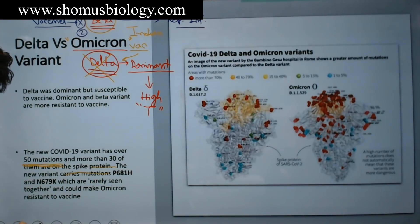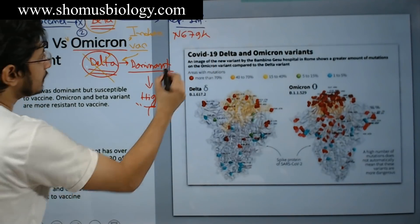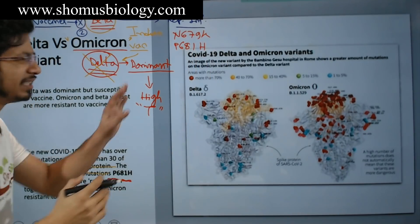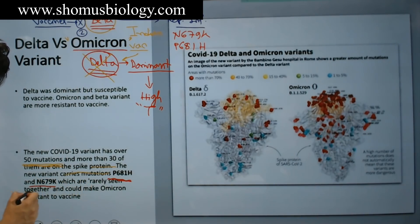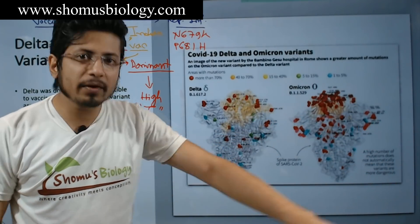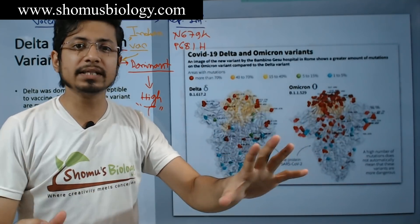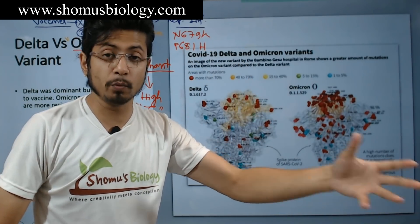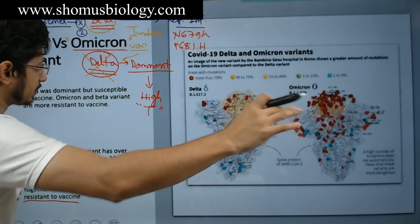In particular, there are two notable mutations: N679K and P681H. These two mutations are rarely found together, but they can make this Omicron variant resistant to the vaccine, and that is a growing concern. All the groundwork done over the last one and a half years — producing vaccines, vaccinating people — could be in vain if this Omicron variant is resistant to the vaccine. We don't yet know how effective vaccination is against the Omicron variant, and that is the highest concern right now.